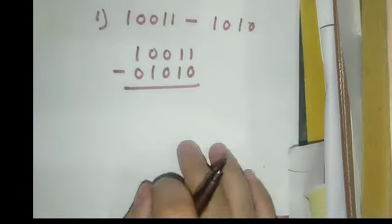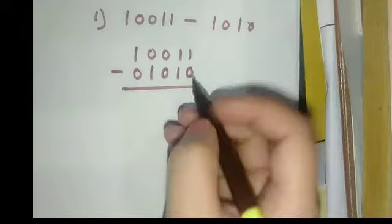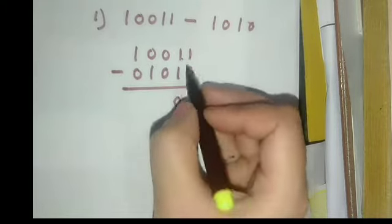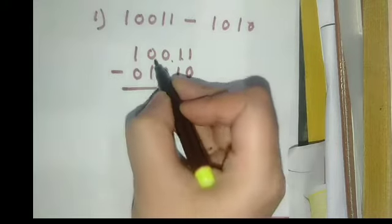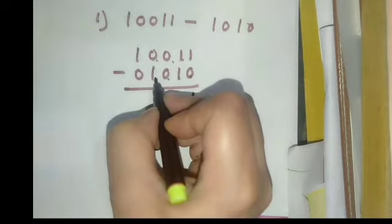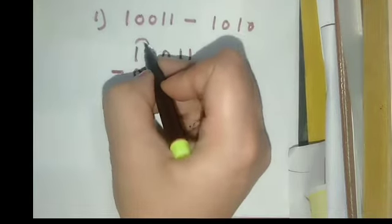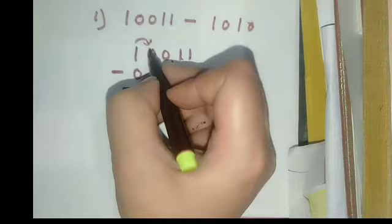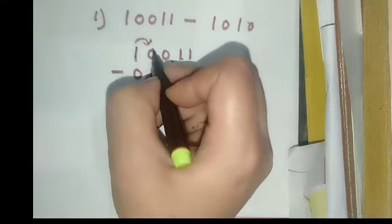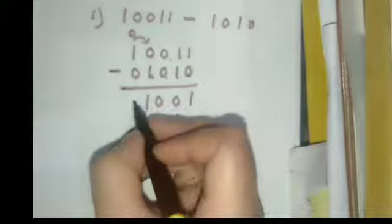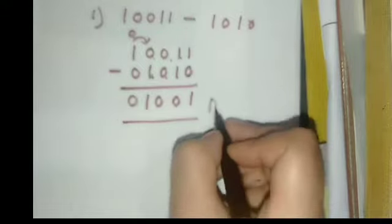Now we subtract column by column: 1 minus 0 equals 1, 1 minus 1 equals 0, 0 minus 0 equals 0. For 0 minus 1, we take a borrow — after giving the borrow, the next position becomes 0, so here it becomes 2. 2 minus 1 equals 1, and the last column: 0 minus 0 equals 0. This is the answer.